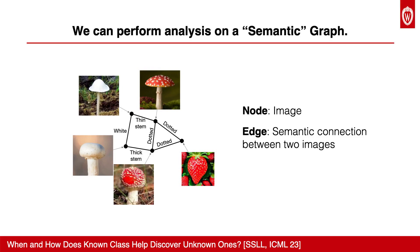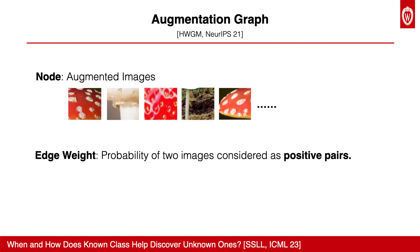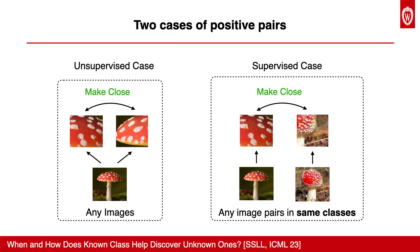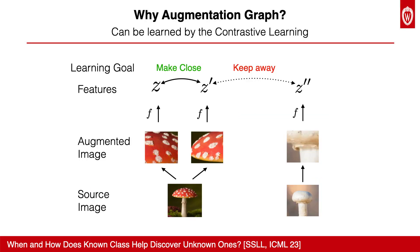We perform analysis on a semantic graph, where all nodes are labeled and unlabeled images, and the weight of the edges measures the semantic connection strength between two images. In the augmentation graph, semantic connection is measured by the probability of two images being considered as positive pairs. In the NCD setup with both labeled and unlabeled samples, positive pairs come from two cases: in the unsupervised case, two images are augmented from any unlabeled image; in the supervised case, two images are augmented from two labeled samples from the same class. Such an augmentation graph can be learned by contrastive learning, which pulls close the embeddings of positive pairs and pushes away the negative pairs.